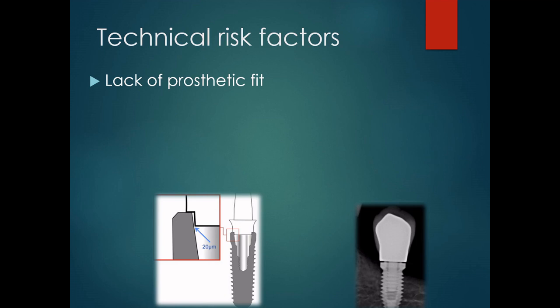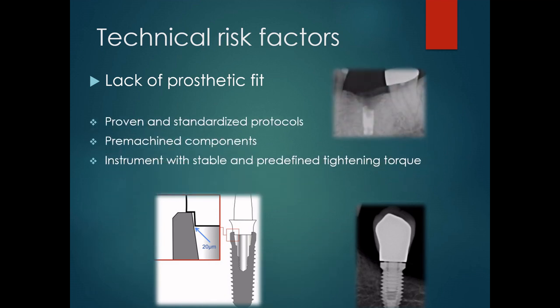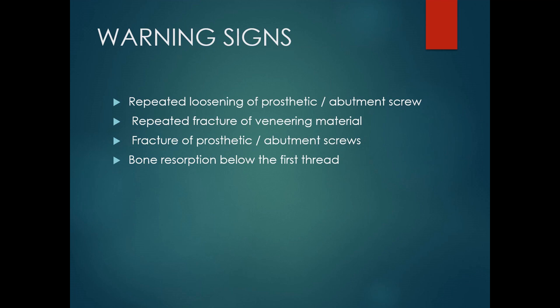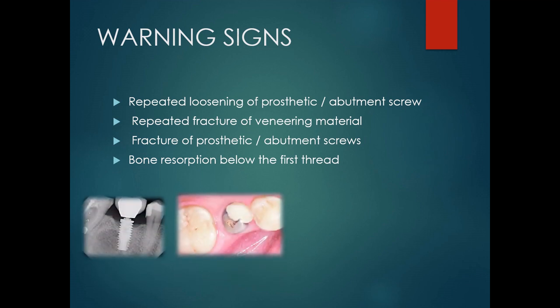Coming to technical risk factors, which include lack of prosthetic fit. Misfit at the abutment-implant interface or absence of passive adaptation can lead to fracture, and the most common technical complication in implants is fracture of the abutment screw. To prevent such technical risk factors, we can follow proven and standardized protocols, use pre-machined components, and use instruments with stable and pre-defined tightening torque. Warning signs before an implant fails include repeated loosening of the prosthetic or abutment screw and repeated fracture of veneering material.